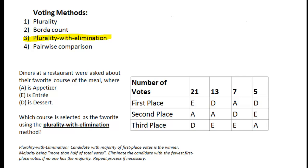This video describes how the plurality with elimination method works. This method is similar to the plurality method, which said whichever candidate has the most first place votes wins. But plurality with elimination uses a different word. It doesn't say the most first place votes, it says the majority of first place votes. So let's talk about that for just a second.